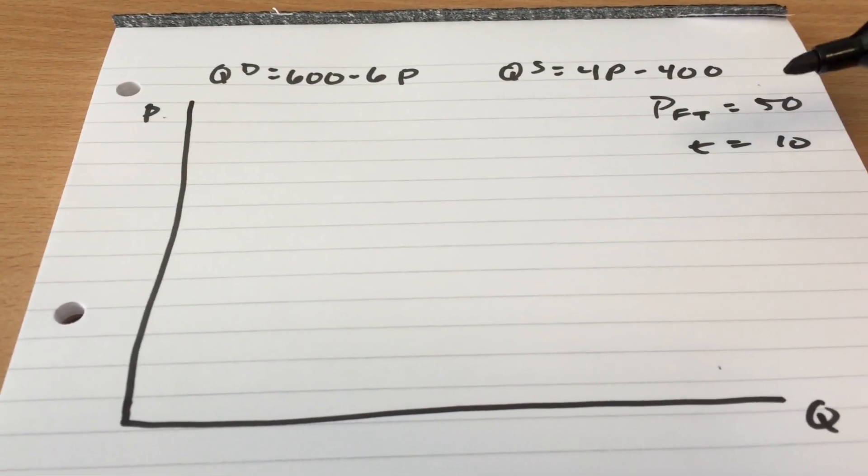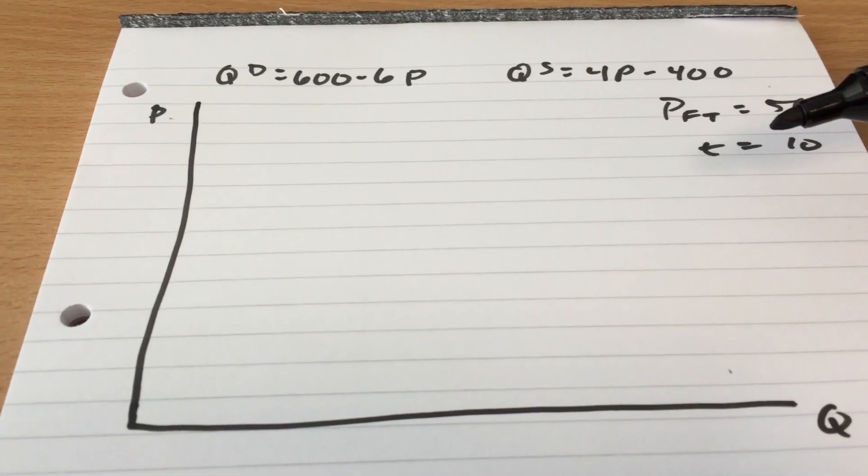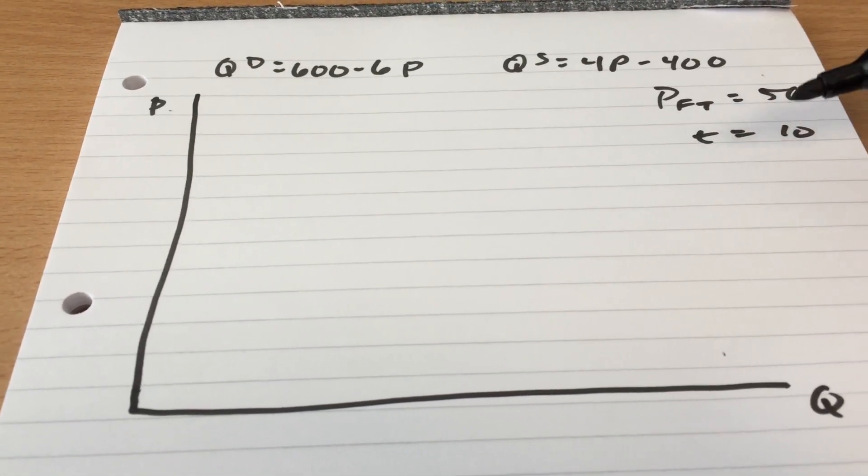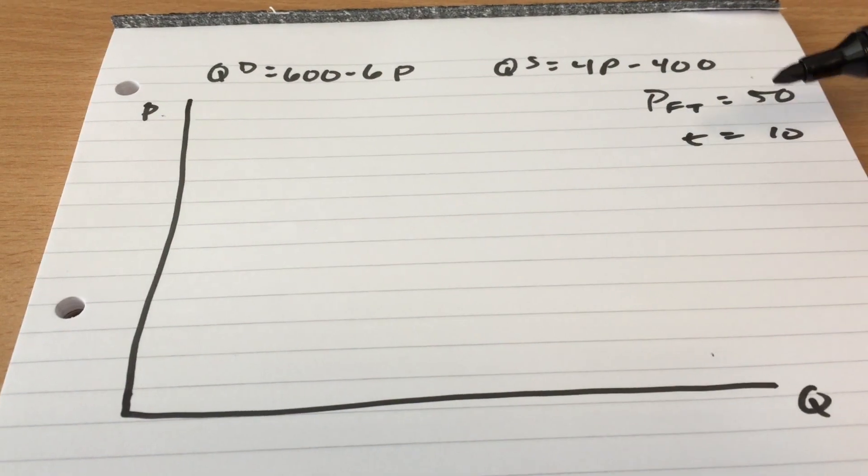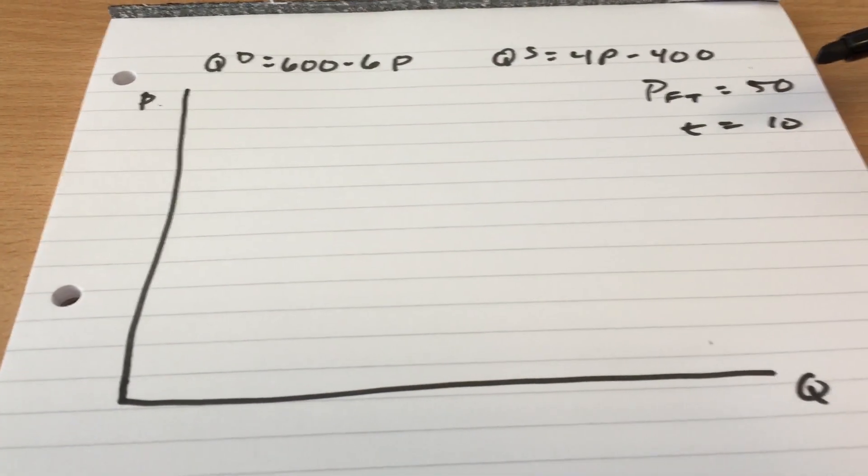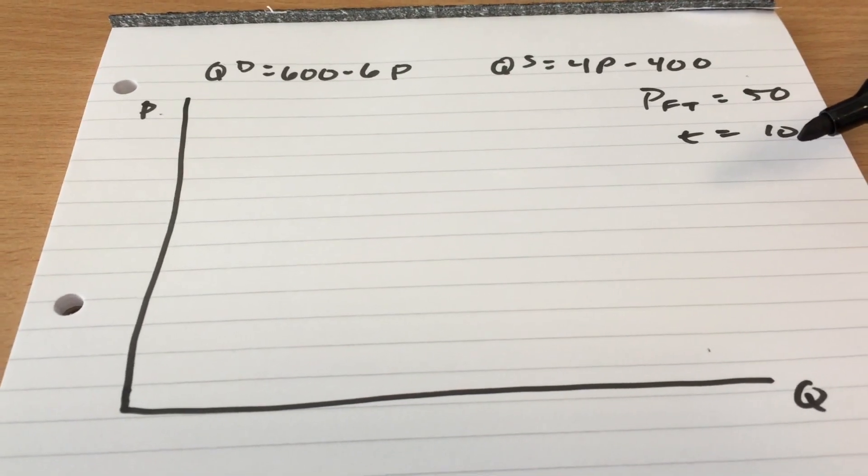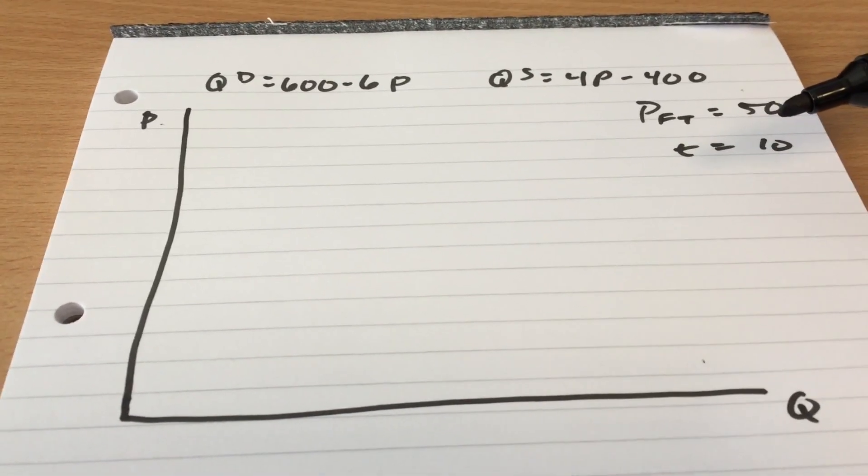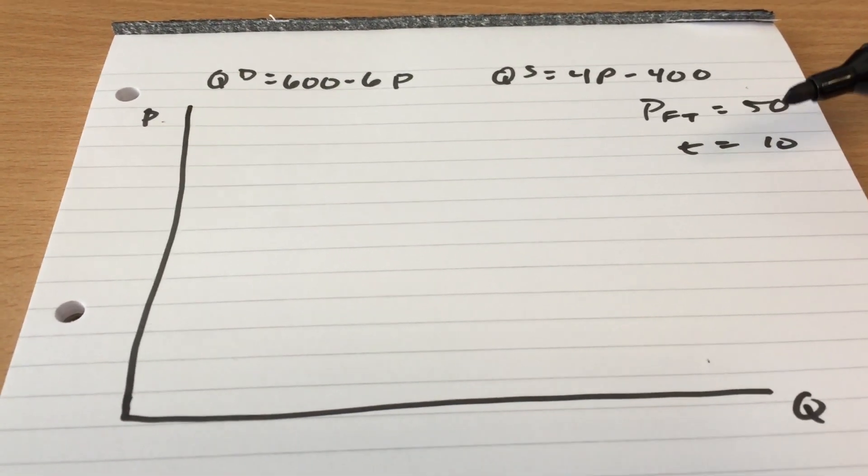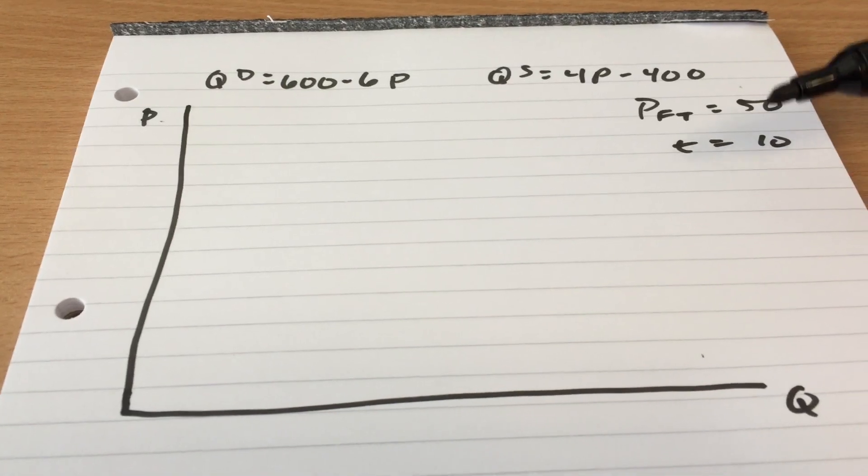The big difference again between a small country and a large country is a small country, it doesn't matter what that tariff is, the terms of trade price isn't going to move. These guys cannot alter world prices so that's always going to be 50. So when we add on the tariff of 10, the price in our country is going to go up by the full amount of the tariff. So that's going to drive the price up from 50 to 60.